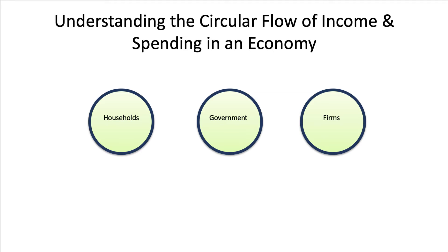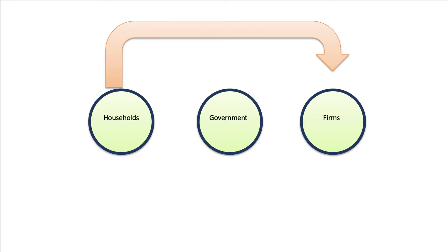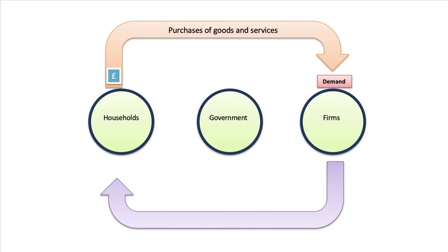These are essentially the three big components of the domestic circular flow. The main flow from households to firms is in terms of demand — consumer spending on goods and services, perhaps a new car, some home improvements, or a meal out in a restaurant. Consumer spending on goods and services is the biggest single component of aggregate demand, and that's a flow from households to firms, whose job it is to supply those goods and services.